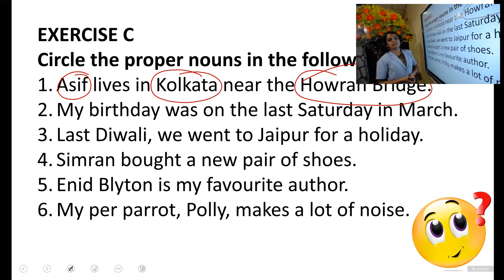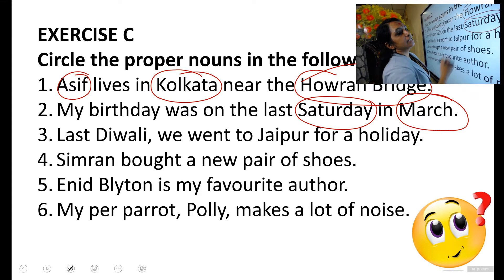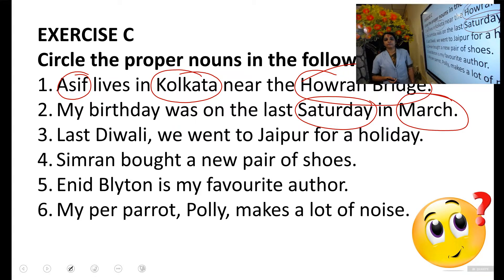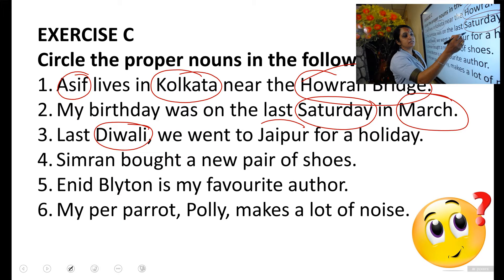Now the second one: My birthday was on the last Saturday in March. We have two proper nouns — Saturday, which is a day of the week, and March, which is the name of a month. So circle Saturday and March. Third sentence: Last Diwali, we went to Jaipur for a holiday. You can easily identify the proper nouns because proper nouns begin with a capital letter. Diwali is a proper noun because it is the name of a festival, and Jaipur is a proper noun because it is the name of a place.